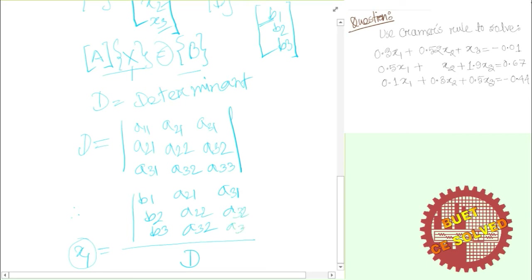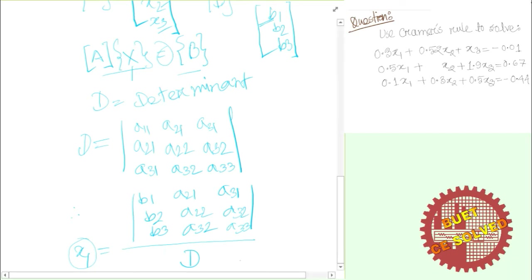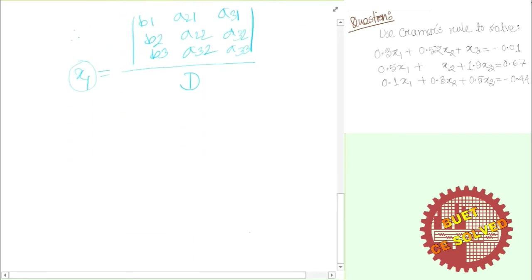Similarly, for x2, the first column remains as usual, the second column is replaced by the b constant vector b1, b2, b3, and the third column stays as A. The determinant of this modified matrix divided by determinant of A gives x2.